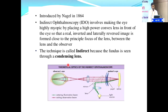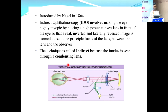The indirect ophthalmoscope was introduced by Nagel in 1864. The principle is that we make the eye highly myopic by placing a high-power convex lens in front of the eye, so that we get a real, inverted, and laterally reversed image. The image is formed close to the principal focus of the lens, between the lens and the observer. It is called indirect because we are observing the fundus through a condensing lens.